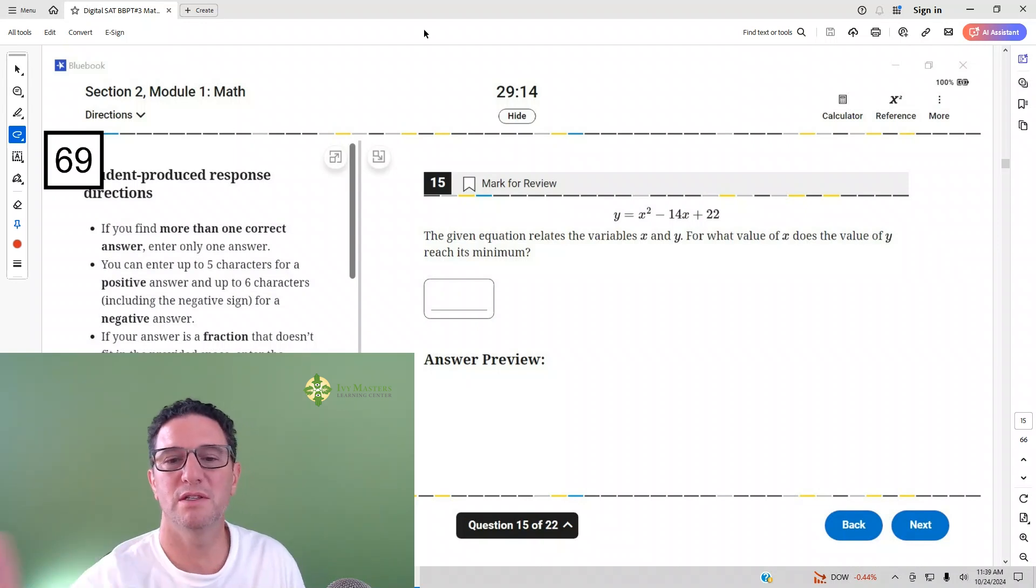Number 15 reads, the given equation relates to variables X and Y. For what value of X does Y reach its minimum? We're going to do it by hand first. Stick around for the Desmos solution.